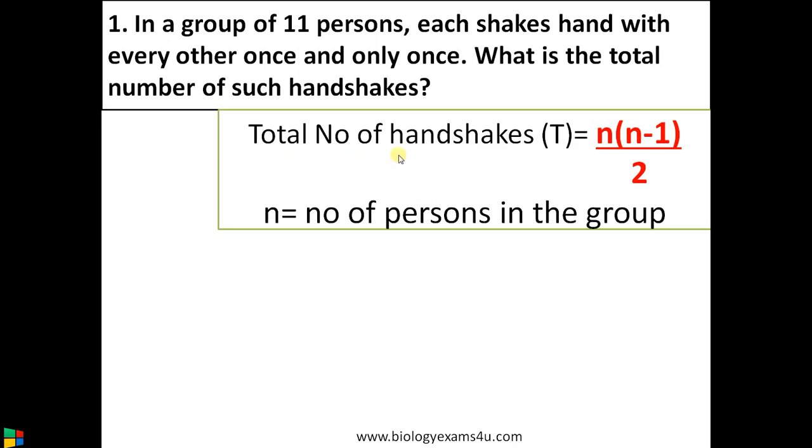There's a simple equation to find the solution. Total number of handshakes T equals n into n minus 1 by 2, where n is the number of persons in the group.